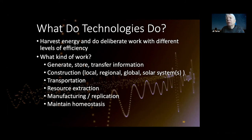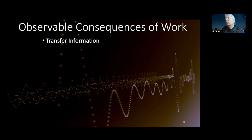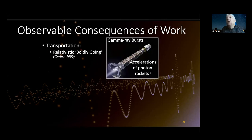Other kinds of work? Transfer of information is one of the things we use energy to do. When the first gamma ray bursts were found, we wondered whether those might be the annihilation accelerations of photon rockets — half an MeV of matter-antimatter annihilation.